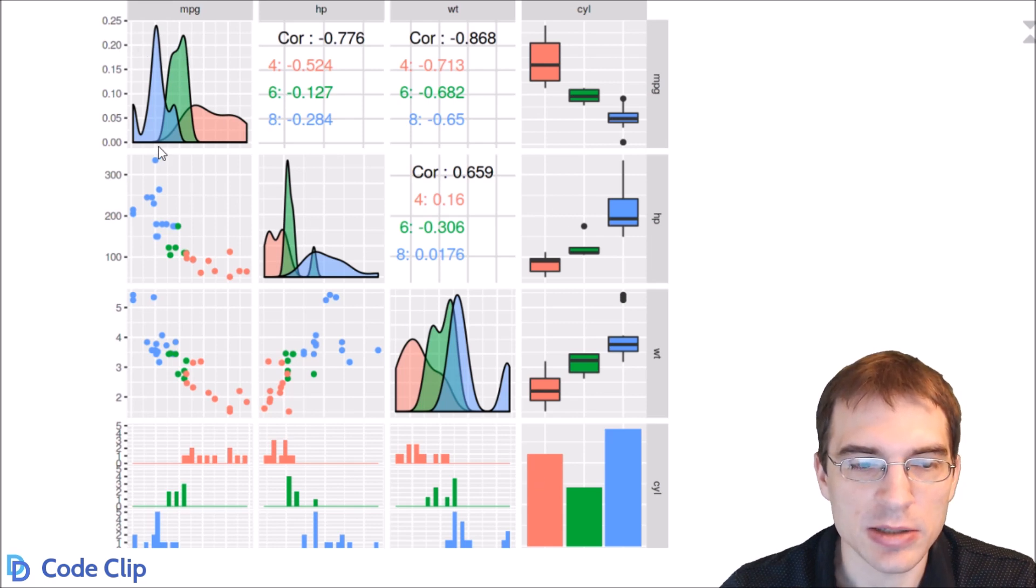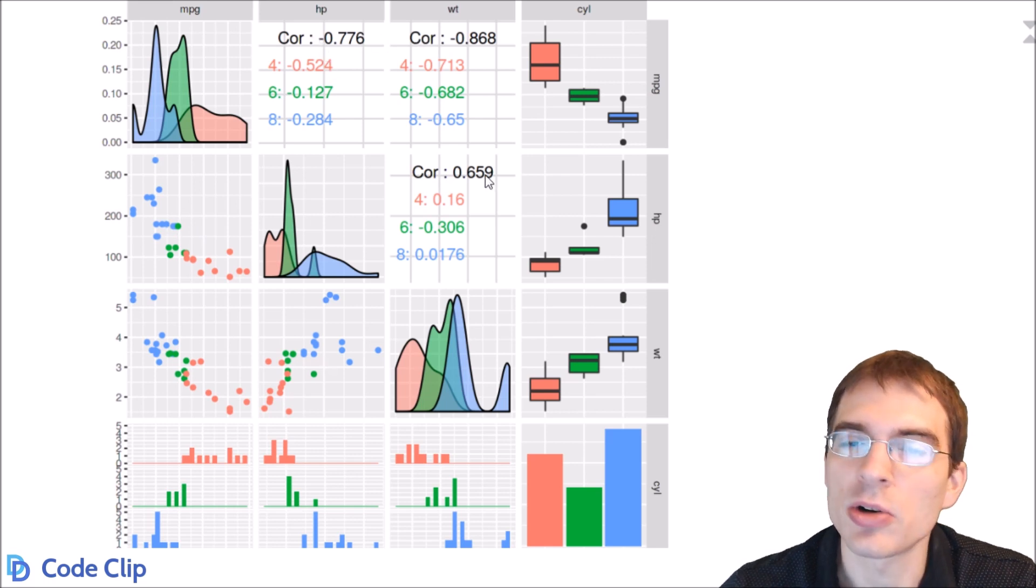So on the density plots, there are three different curves. On the scatterplots, it's colored by that variable. On the correlations, it shows the overall correlations and the correlations within each group.